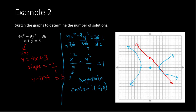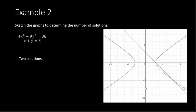It appears the line will intersect the hyperbola at two spots — probably here, and then it cuts down below the line and comes back to hit a second time. Confirming with graphing software, we find we were correct: it crosses at two points.